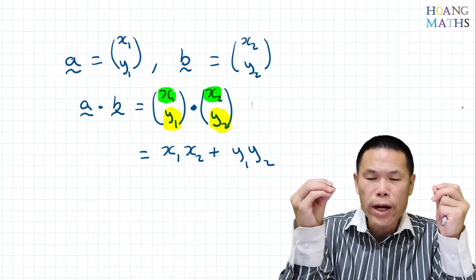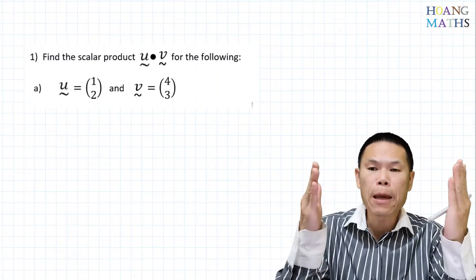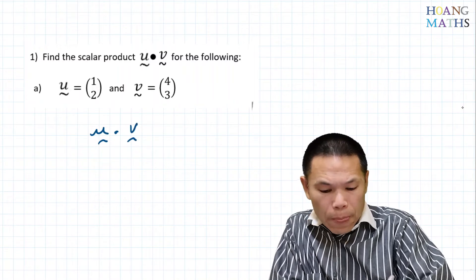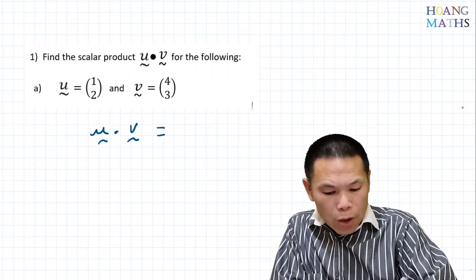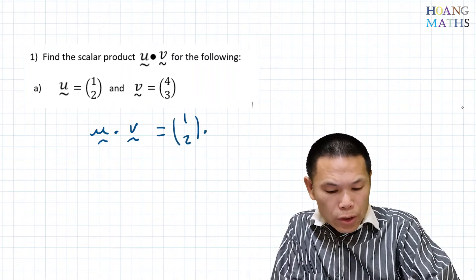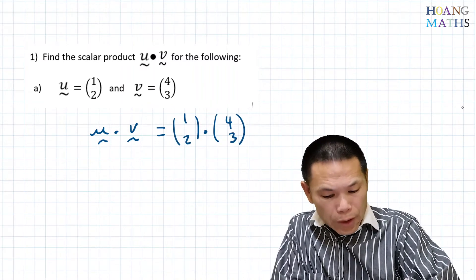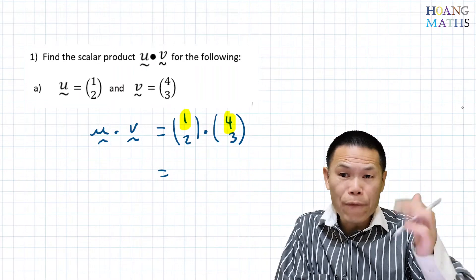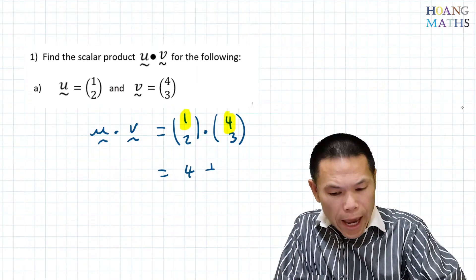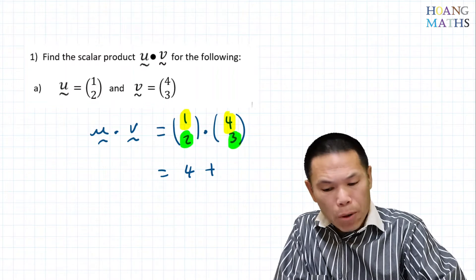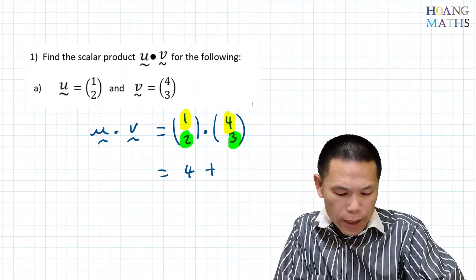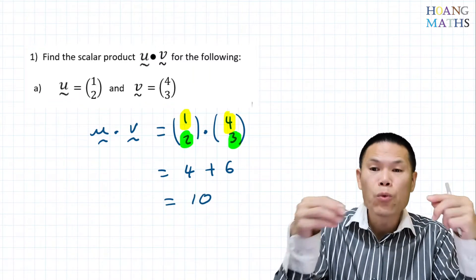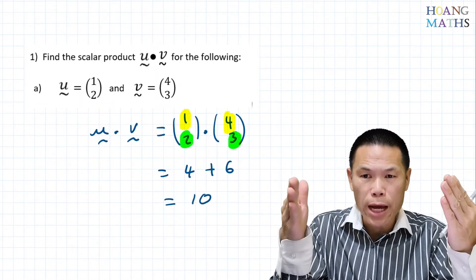So this is the rule for how to work out a dot product. For the first example, we want to work out vector U dot vector V. So that is equal to 1, 2 dot 4, 3. We just multiply the i component, so that is 1 times 4 is 4. And we add the product of the j component, so that is 2 times 3 is 6. Add together, that gives me 10. So U dot V gives me a scalar — that's why we call it the scalar product.